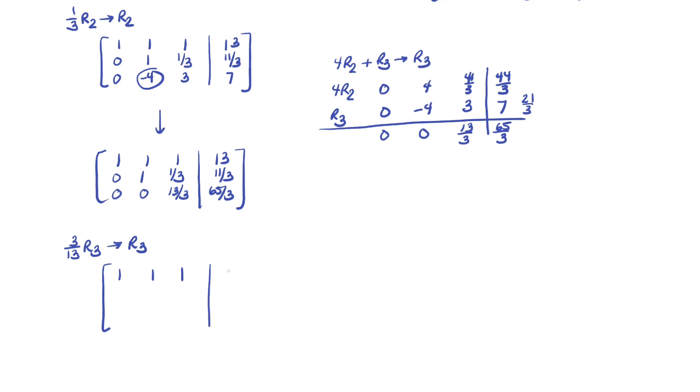So again, 1, 1, 1, 13, 0, 1, 1 third, 11 thirds, 0, 0, 1. 65 thirds times 3 thirteenths is 5. So this is good news. So here's our system at this point. At this point, we translate it back to a system and solve from there.